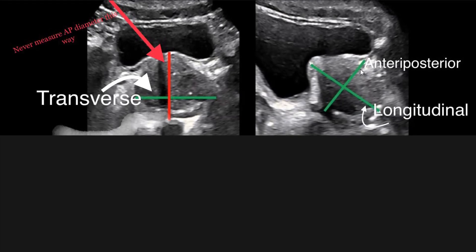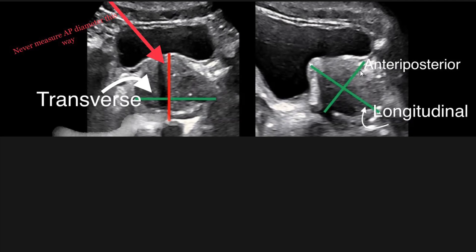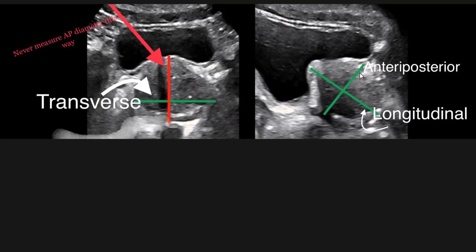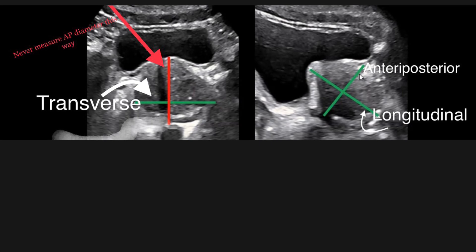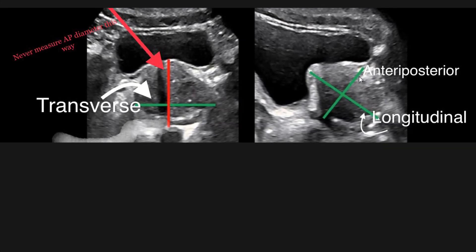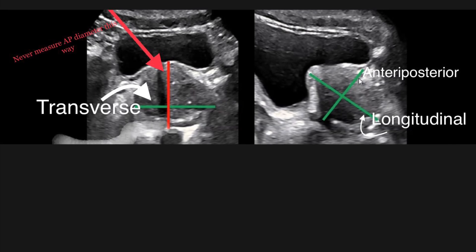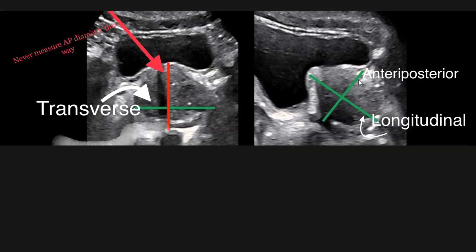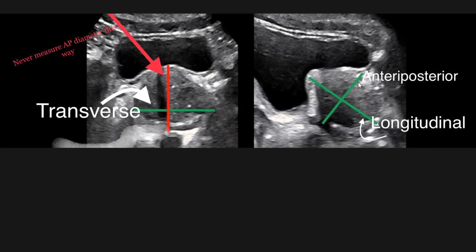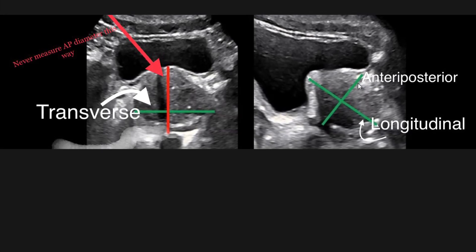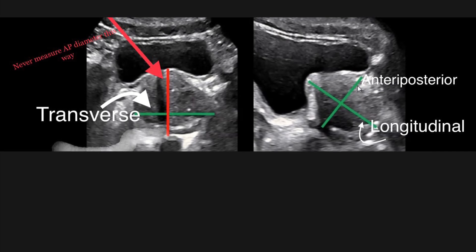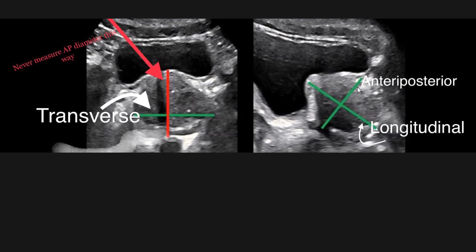MRI measurements are found to be more accurate. In MRI, we use the same sections for acquiring the diameters of the prostate: on the axial image we take the transverse diameter, and on the longitudinal or sagittal image we take the anteroposterior and longitudinal — that is craniocaudal — diameter of the prostate.